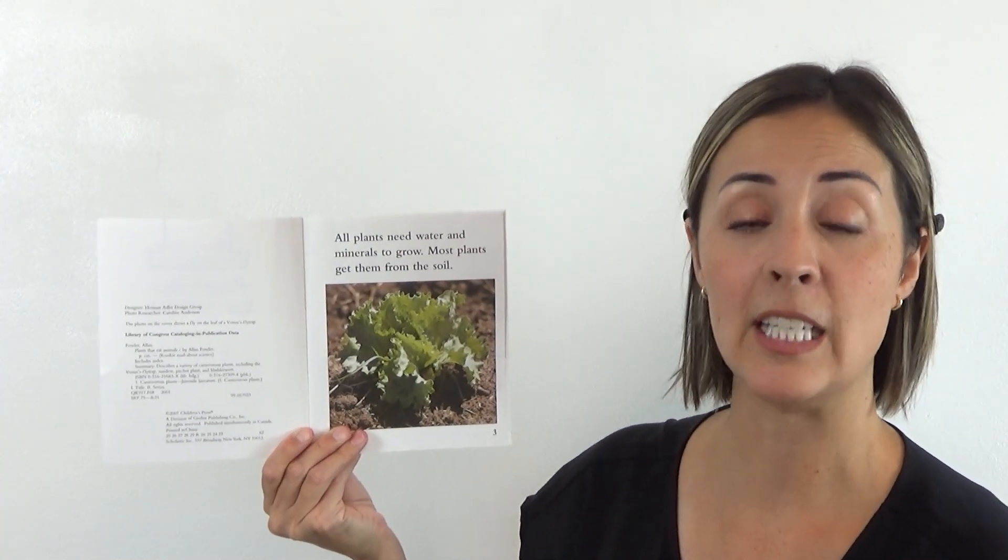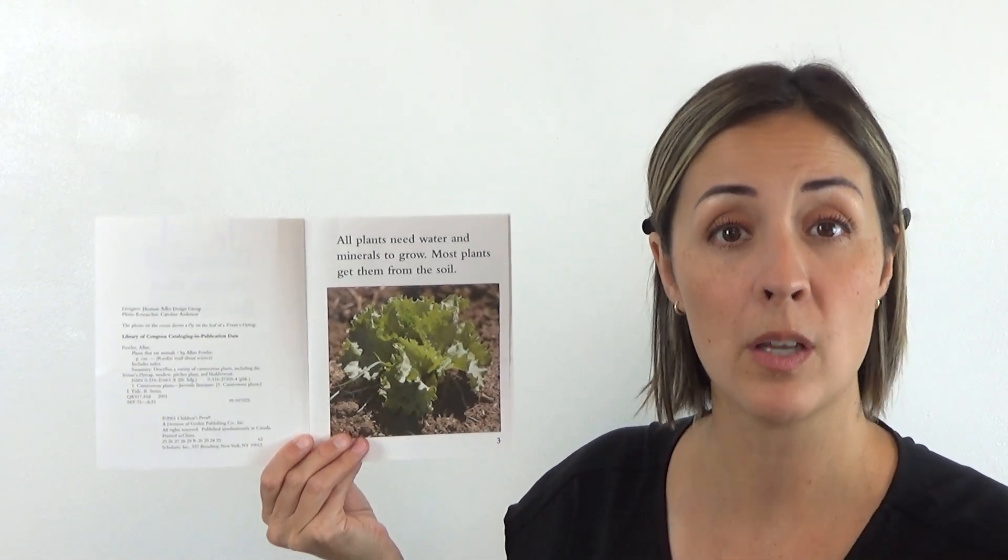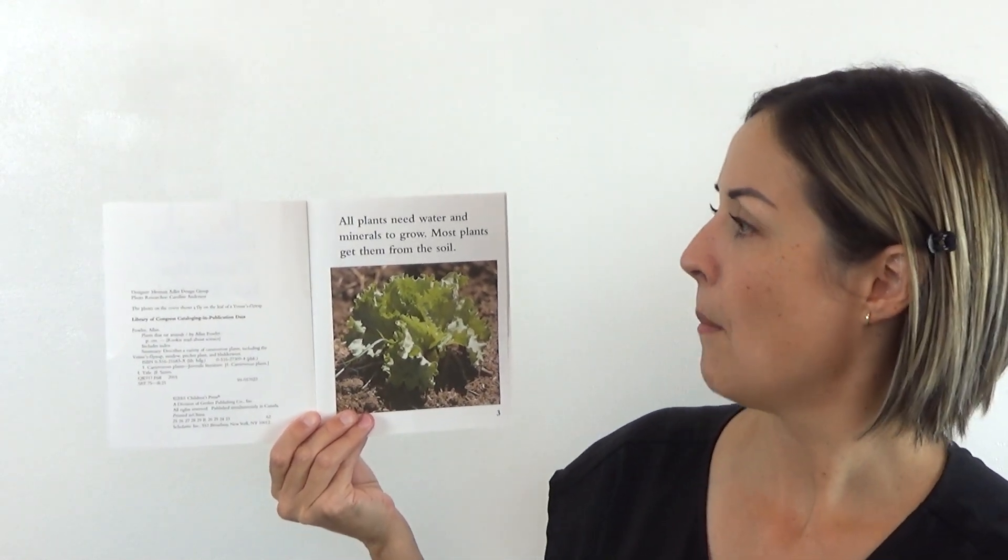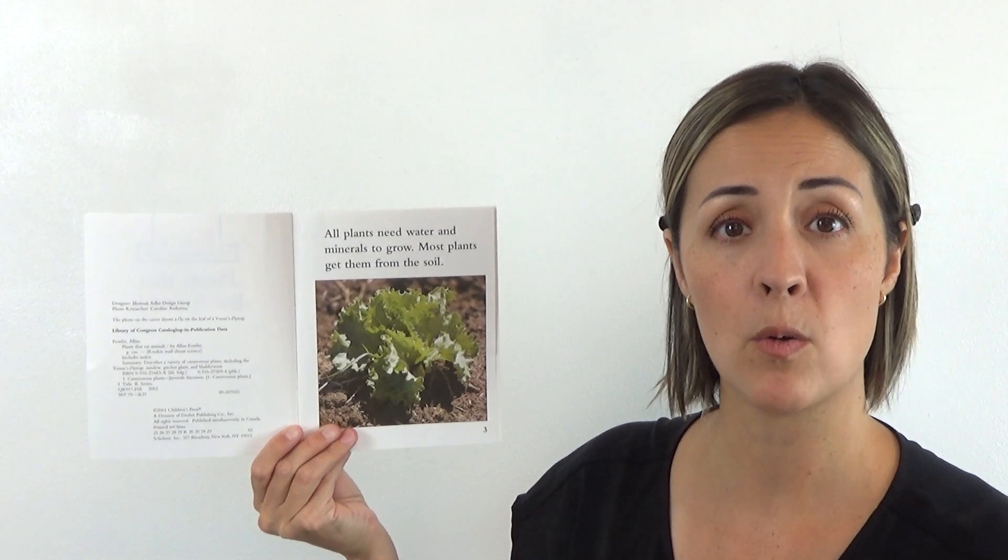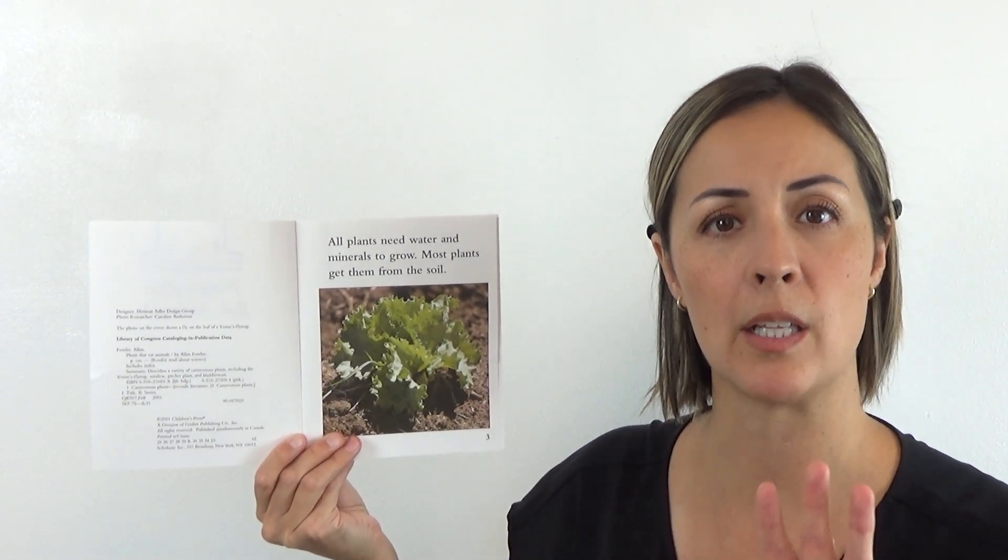All plants need water and minerals to grow. Minerals are the nutrients or the food that a plant needs to grow. Most plants get them from the soil. So did you hear that? All plants need three things in order to grow.